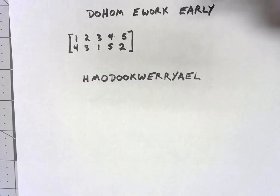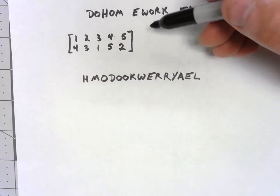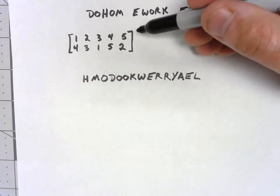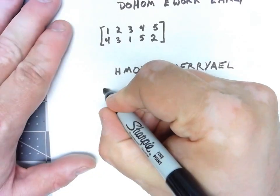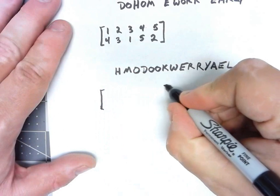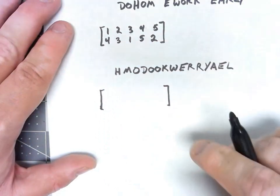And of course, what you can do, you would use an inverse of this permutation to undo it. And how would I find the inverse of that? Well, the easiest way is basically to just flip those things around.